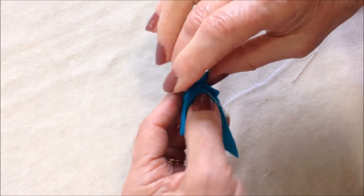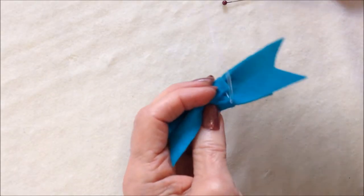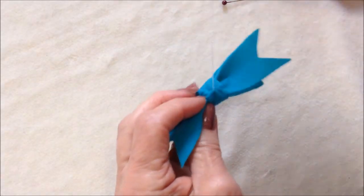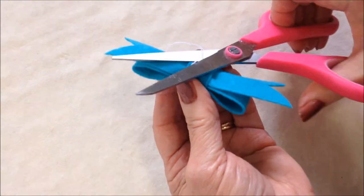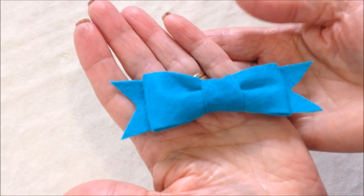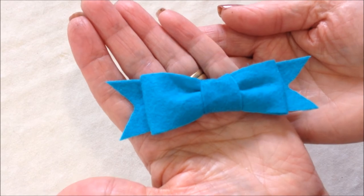Wrap it around and sew the ends together, and there you have a cute felt bow. Thanks for watching, bye for now.